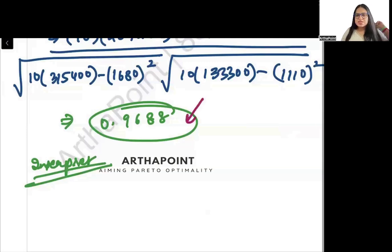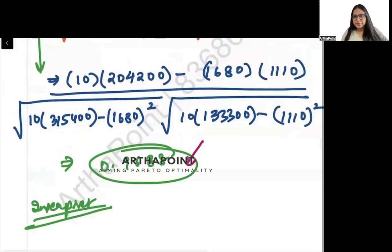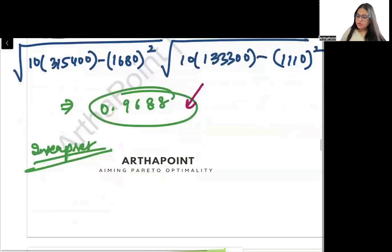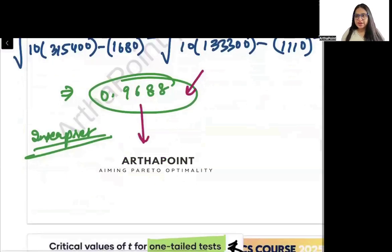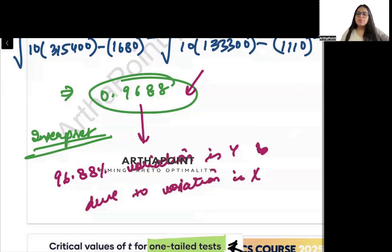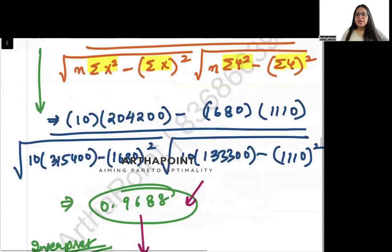Please verify this calculation yourself — carry a calculator in the exam. The interpretation is: 96.88% of the variation in Y is due to, or can be explained by, the variation in X.